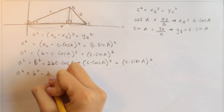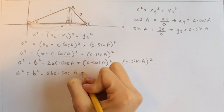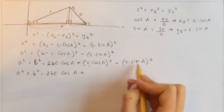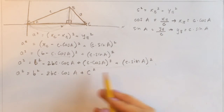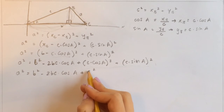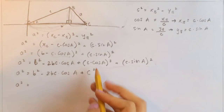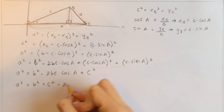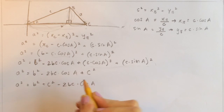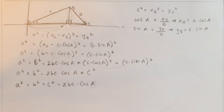So putting it all together: minus 2bc times cosine of A, plus c squared. We basically have our formula. How it's written in the real world: a squared equals b squared plus c squared minus 2bc times cosine of A. You can see that cosine of angle A corresponds with side a. And this is our formula — this is how you prove the law of cosines.